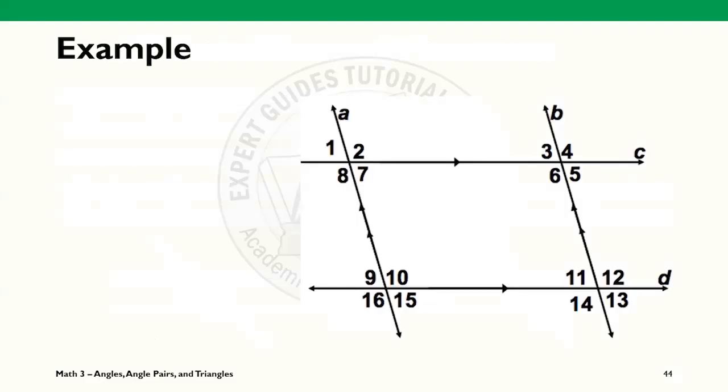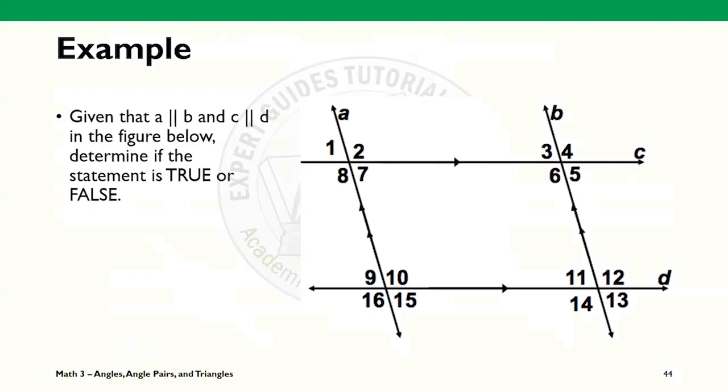Let's try to apply these theorems in a simple example. Here we see four lines where lines A and B are parallel as well as lines C and D. We look at angles 1 and 9. It is true that angles 1 and 9 are congruent because they are corresponding angles. And our theorem states that corresponding angles are always congruent.